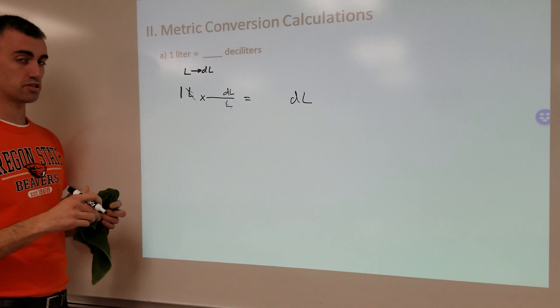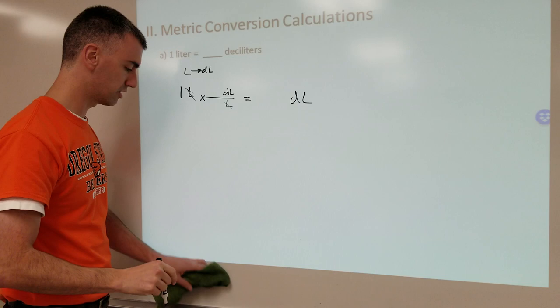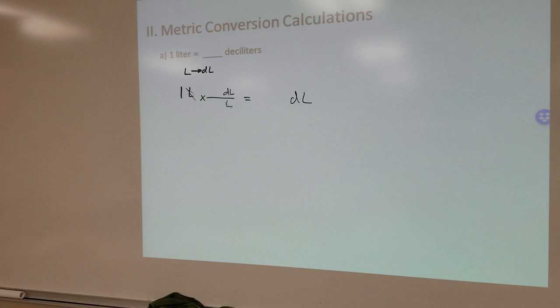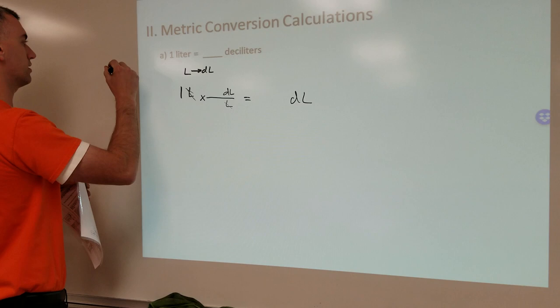Step one: write what you're given. Step two: set up your units so that the right things cancel and you get what you want. Step three is when you go and fill in your numbers. That is where the reference sheet comes in handy. I can grab a copy of the reference sheet — right here it says that deci means one tenth.